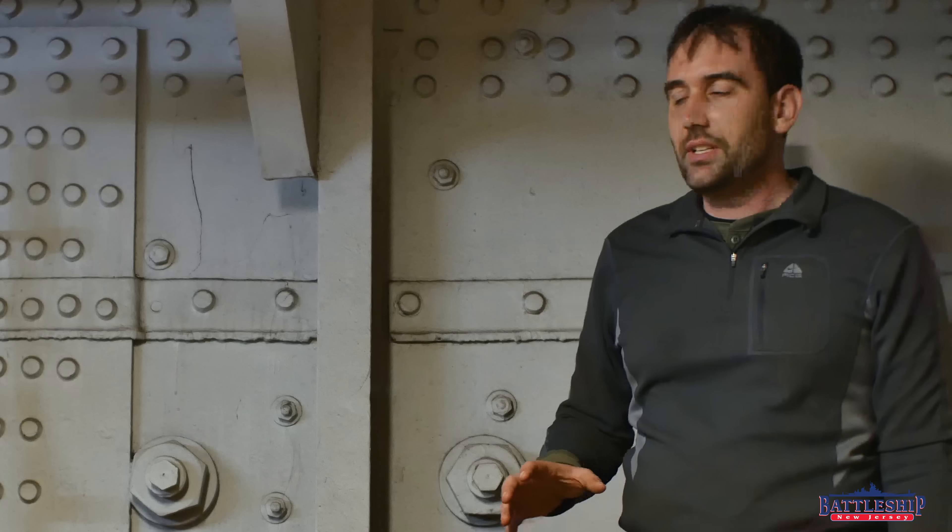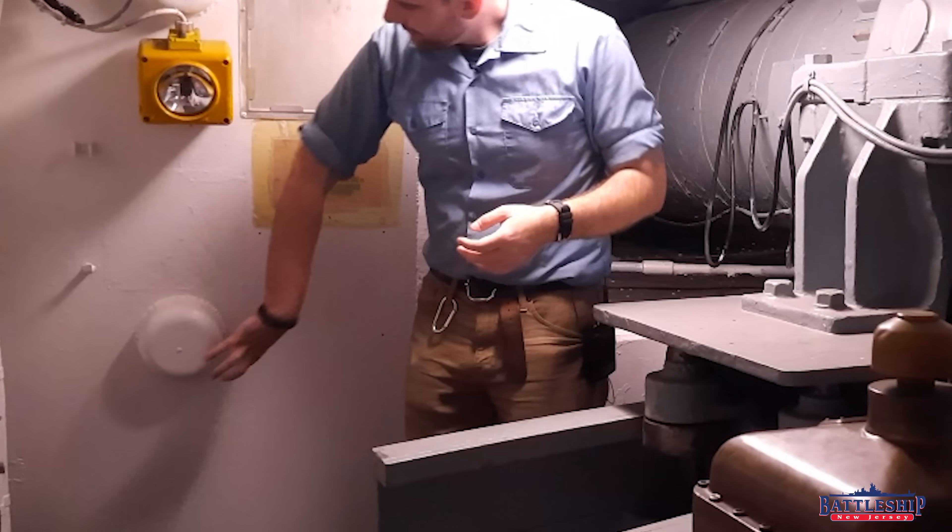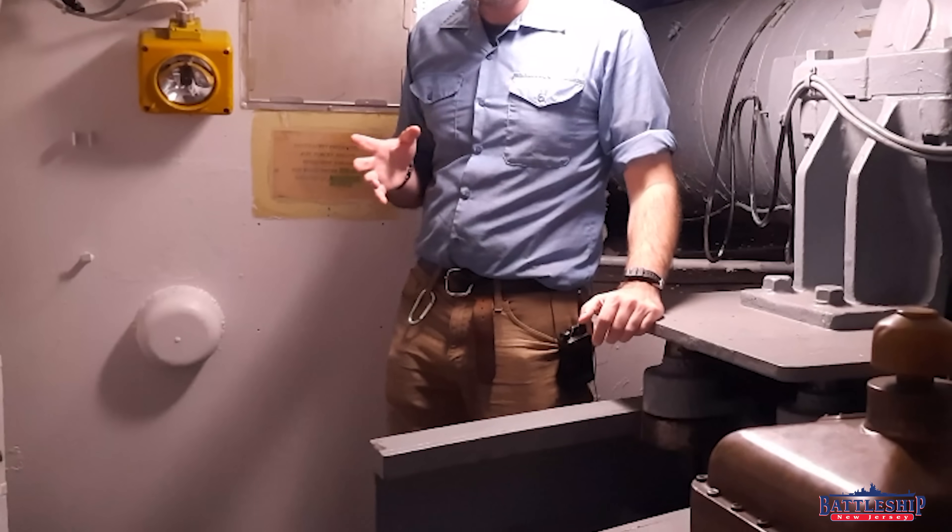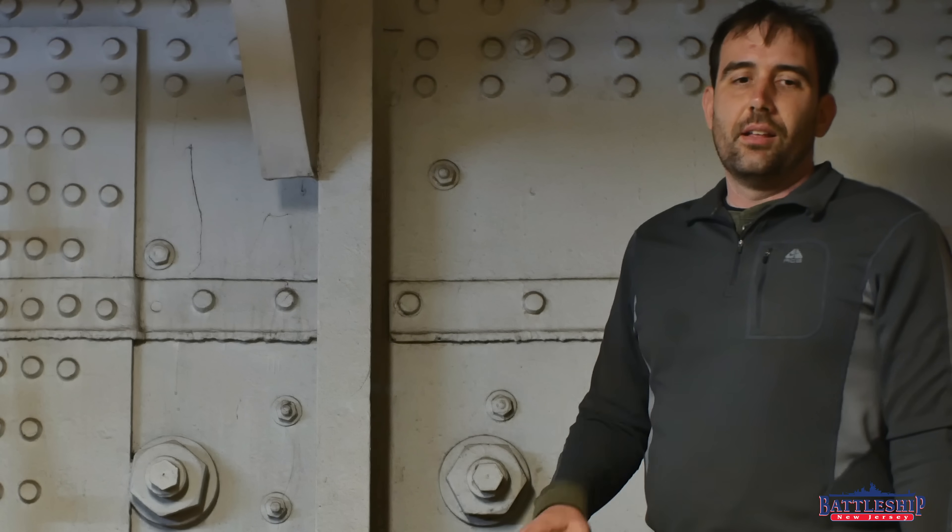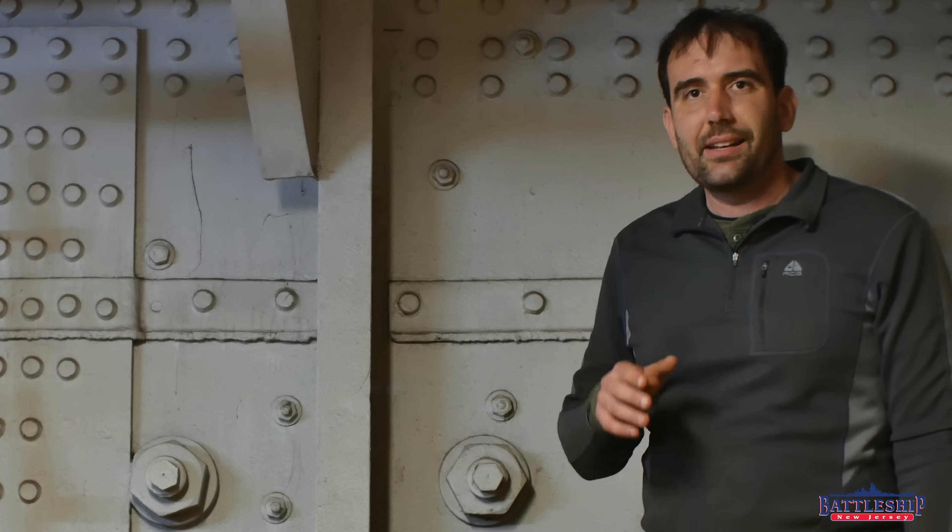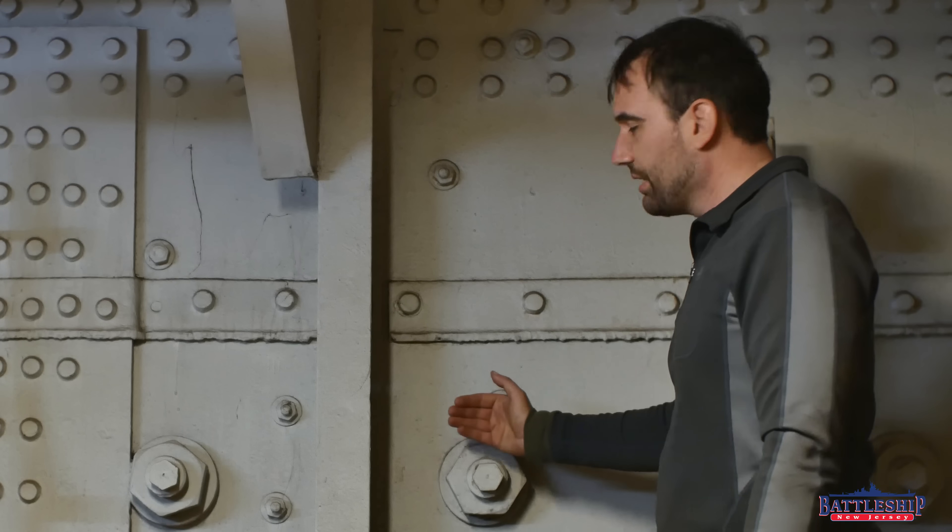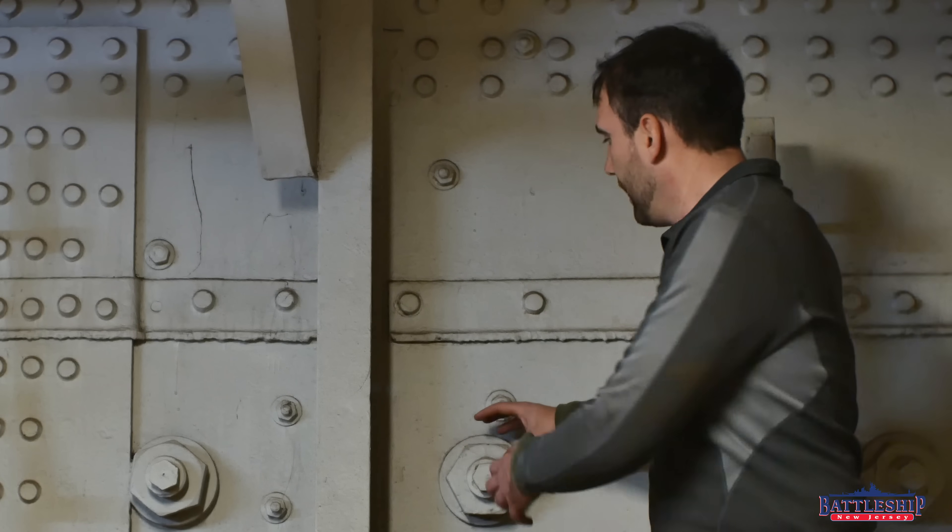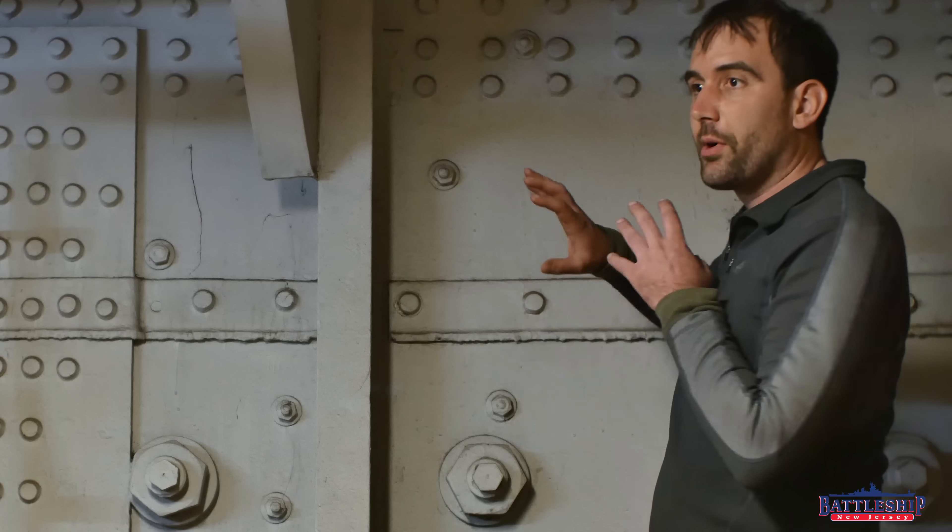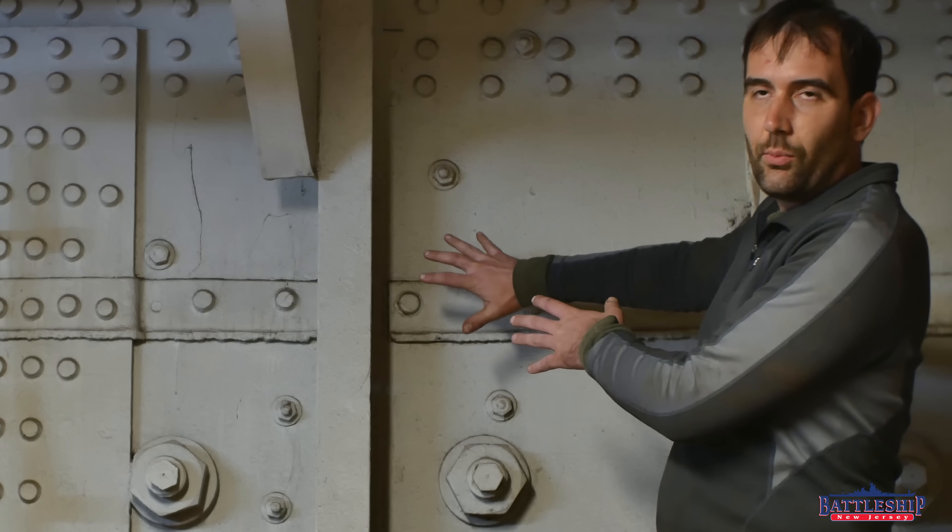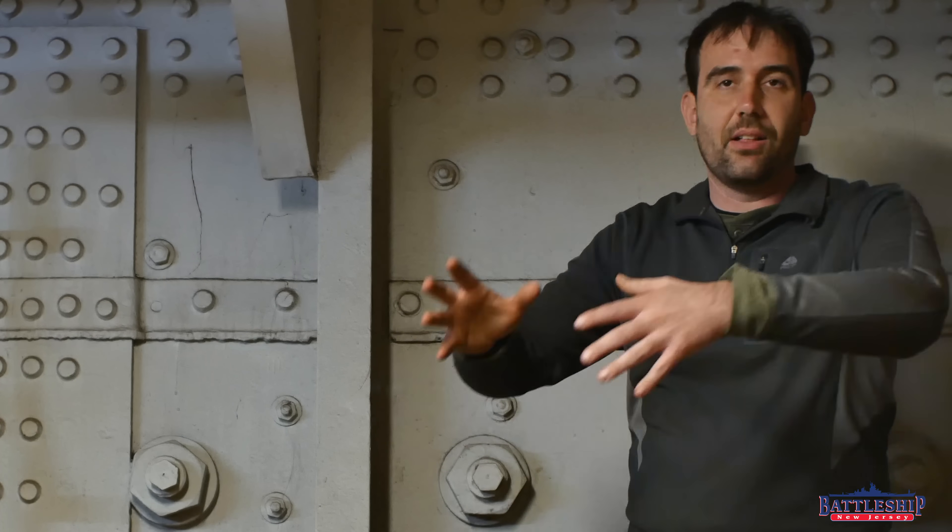On Battleship New Jersey, you can't see this because there's a cap welded over it. The reason New Jersey has that is there was concern that if something hits this bolt and this shears off, well now this becomes a projectile. The armored belt has stopped what's shot at you, but this is now a projectile inside the ship.